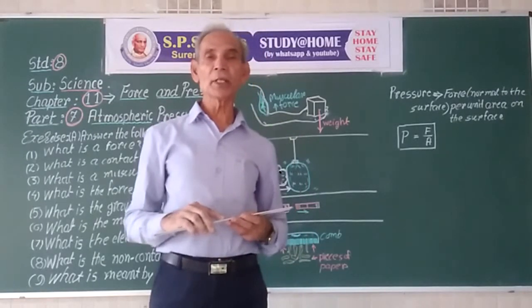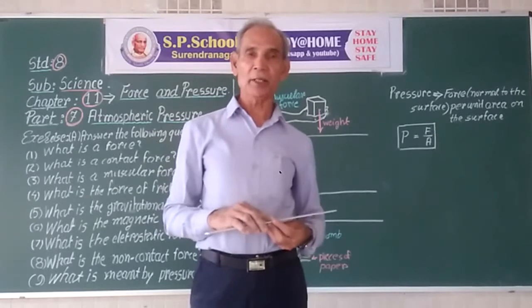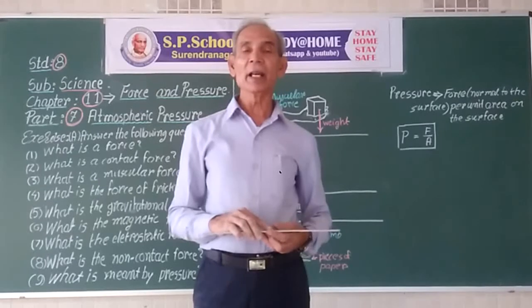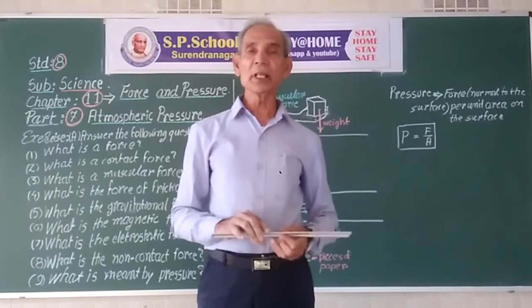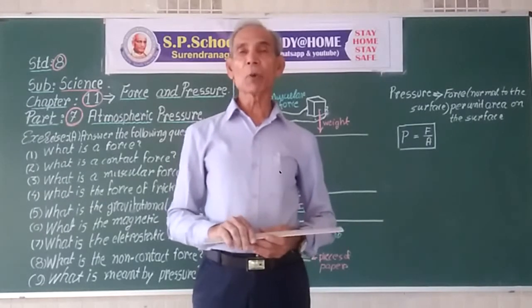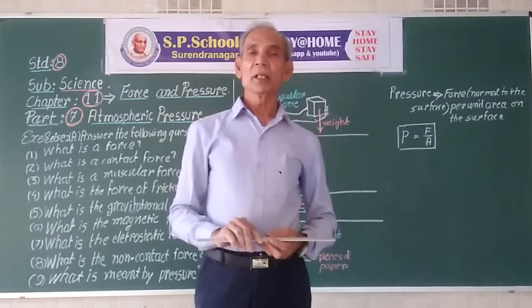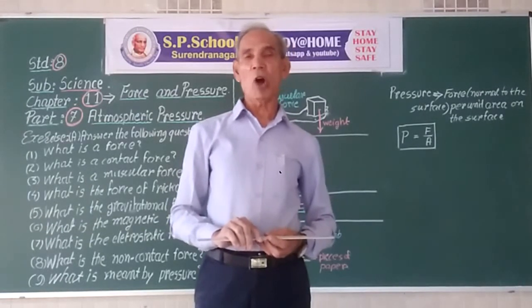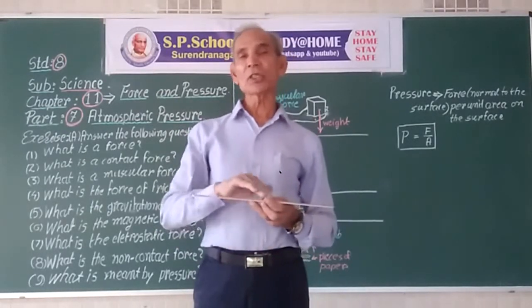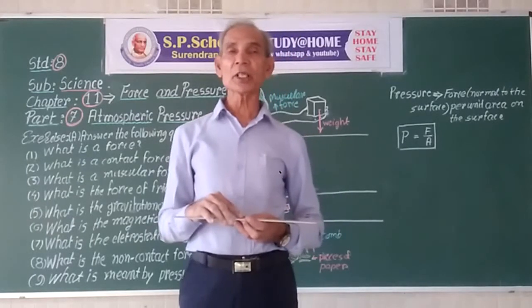When two bodies, with their surface contact, slide in relative motion, a force of friction is generated between them. This force of friction is always against the relative velocity of the body. If the velocity changes, the force of friction immediately changes its direction.